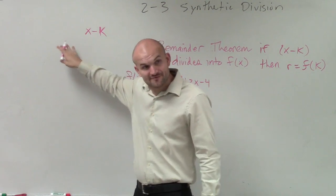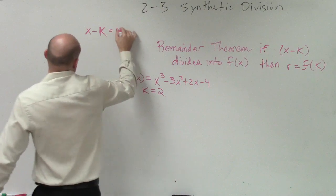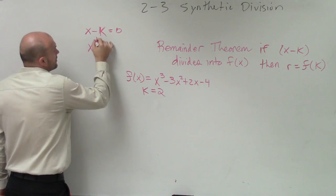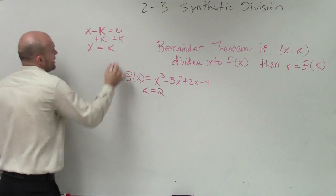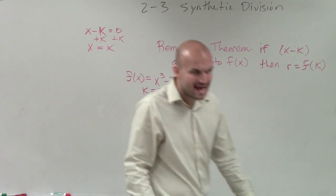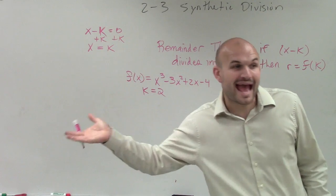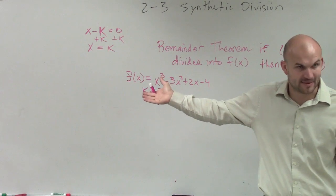So if I have this x minus k as a factor, I know I can set it equal to zero, add k to both sides, and say x equals k. And that would be my zero, so k is my zero, does that make sense?